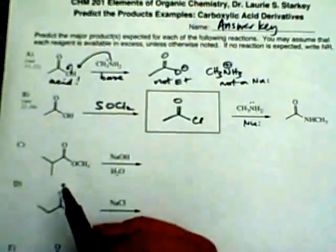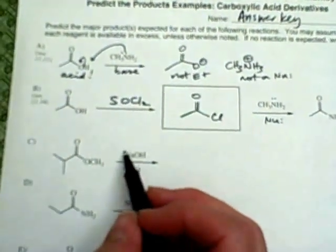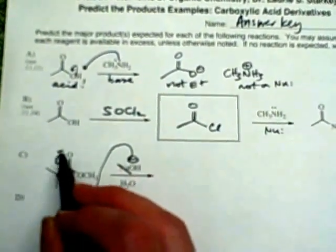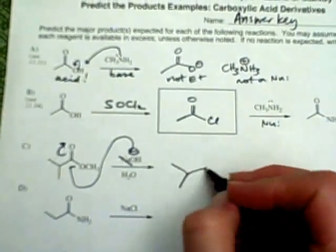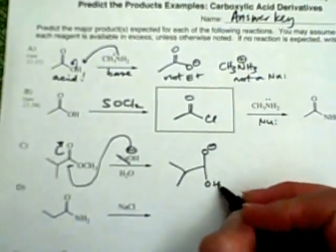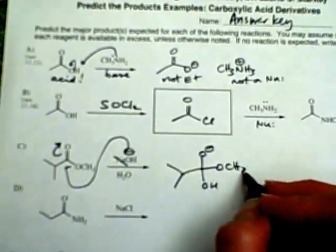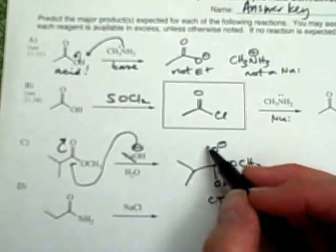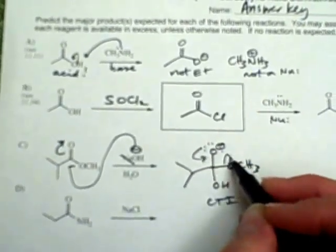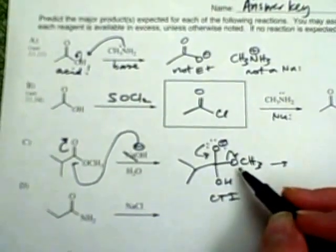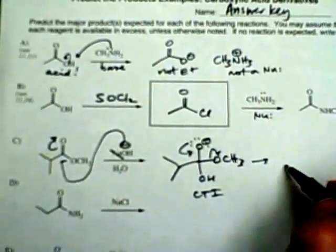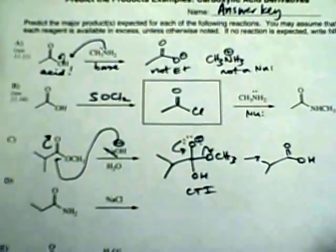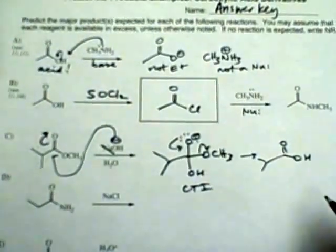Our next reaction starts with an ester and we have hydroxide, sodium hydroxide. This is a very good nucleophile and so we expect that to add in to the carbonyl. And after it does that, we're going to end up with a charged tetrahedral intermediate. We have a good leaving group and so we can kick back down and collapse and kick out the methoxy group. So we're going to be doing a substitution reaction here.